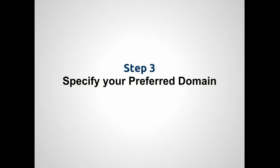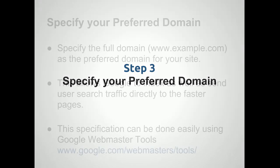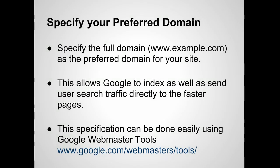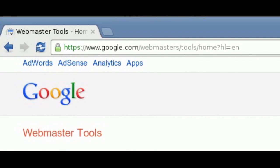Finally, we recommend setting your full domain, www.example.com, as the preferred domain for Google to use. The 301 redirect that we previously set up introduces a small but sometimes perceivable delay when accessing pages via the bare domain. Specifying the full domain as your preferred or canonical domain will allow Google to index the faster pages as well as send user search traffic directly to them.